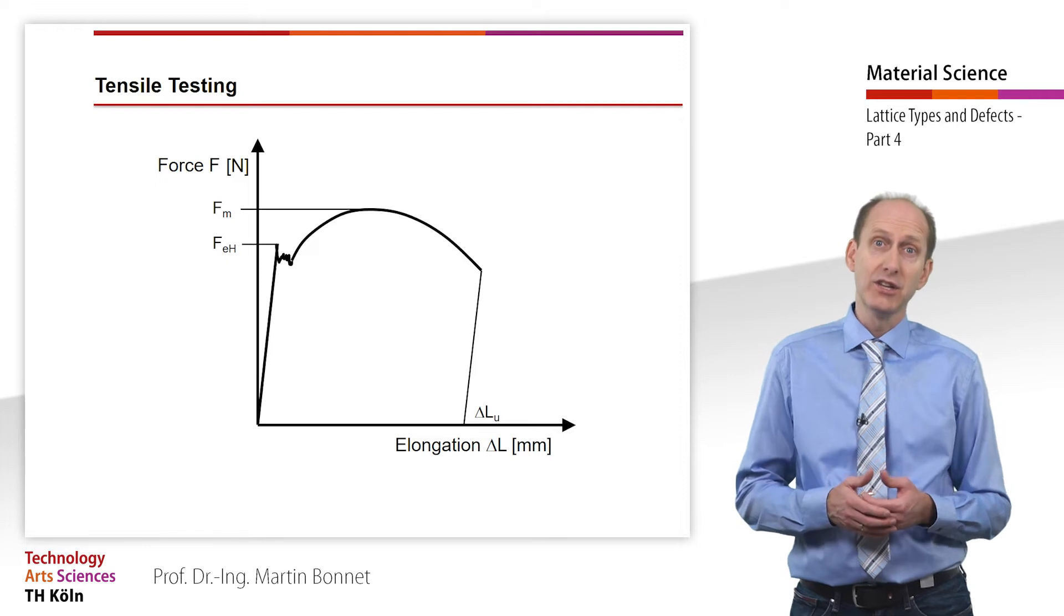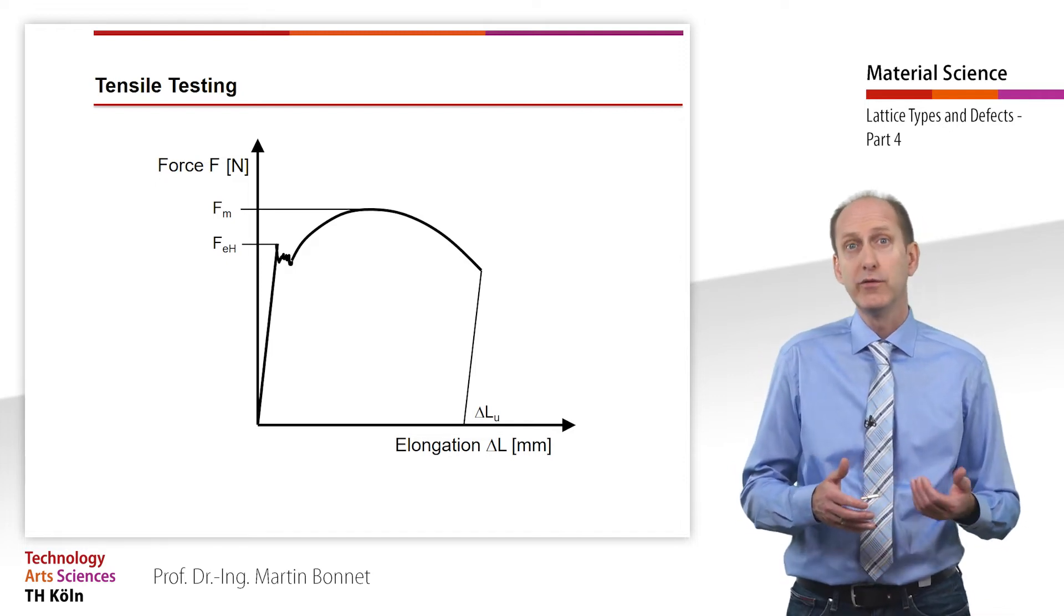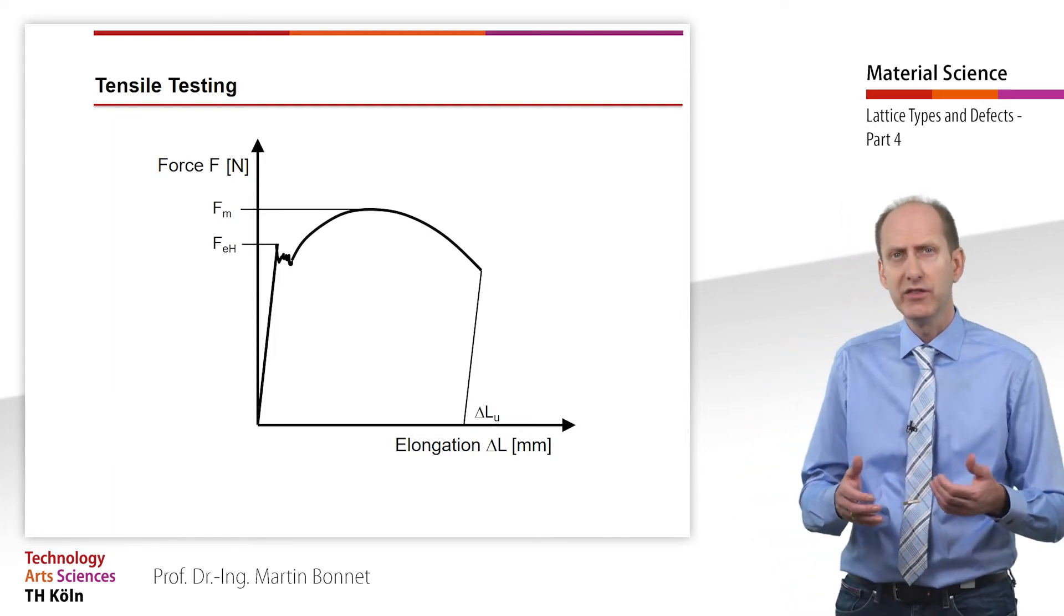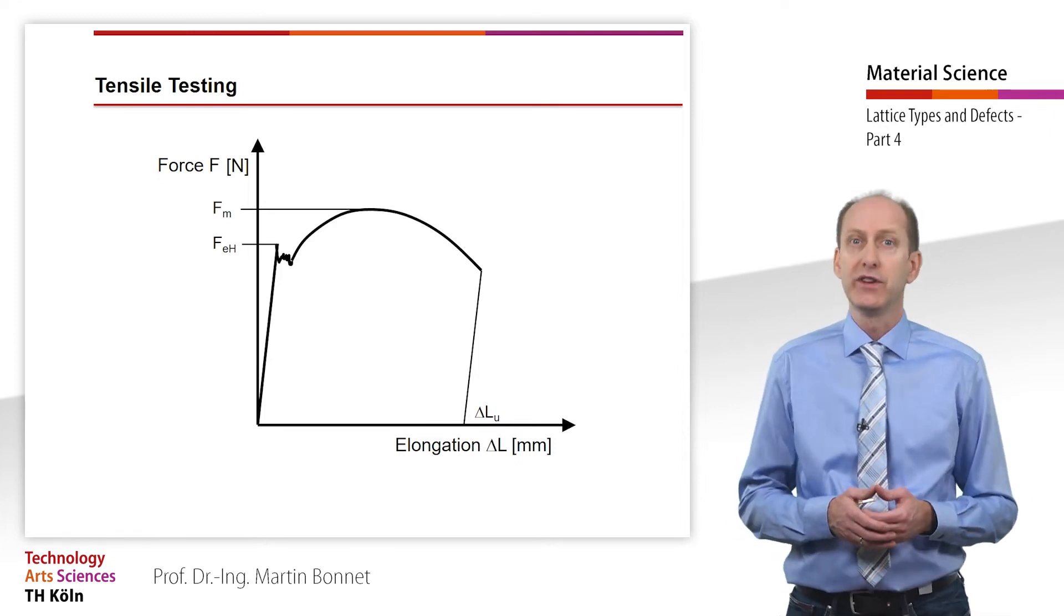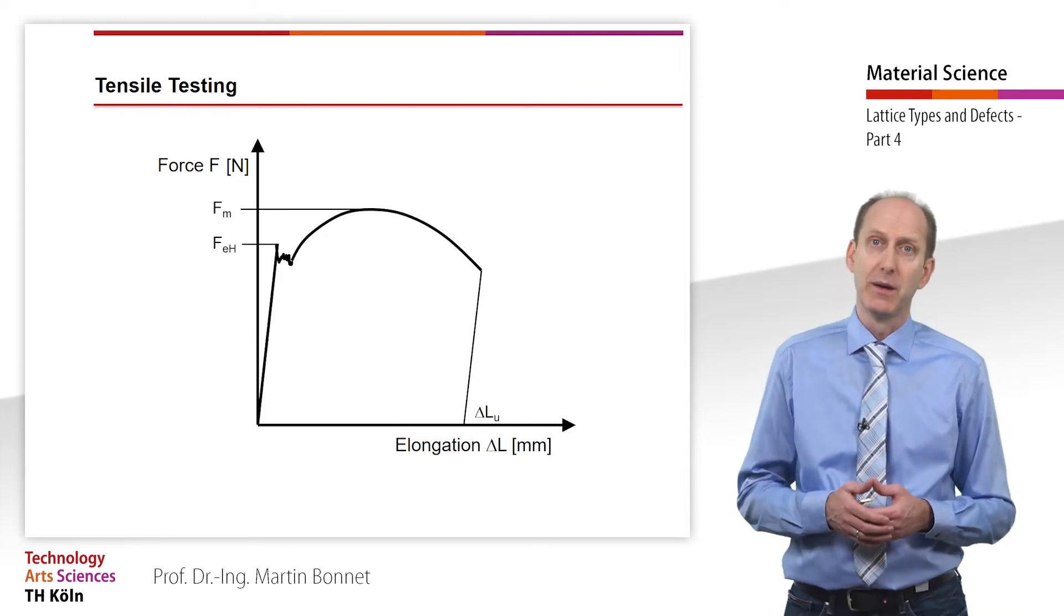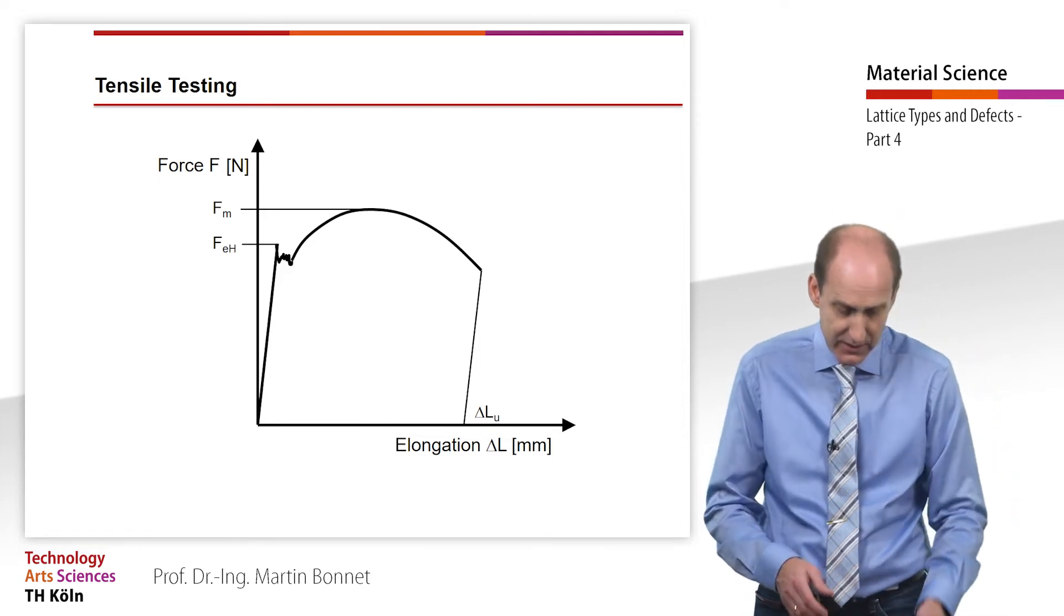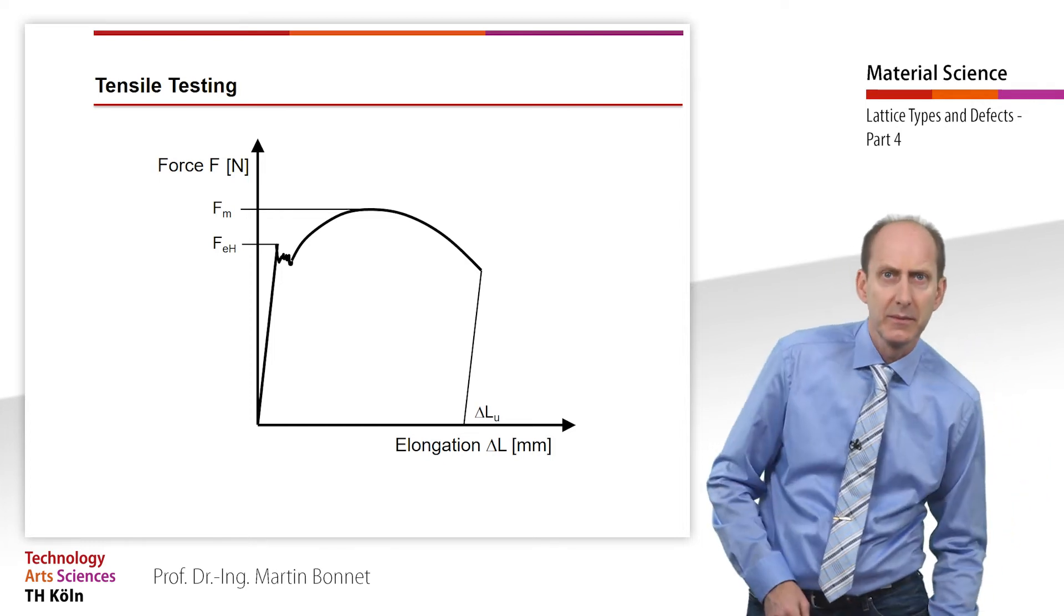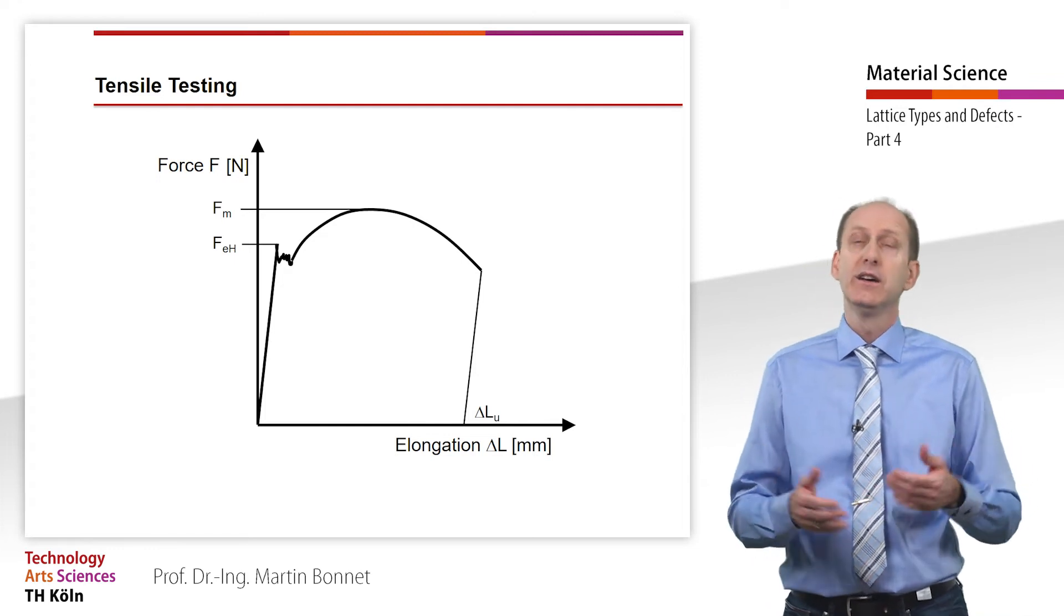Thus, FeH shown in the diagram decreases since the resisting force of the sample suddenly decreases. After exceeding this yield point area, the sample elongates more and more as the force increases. At a specific maximum force Fm in the diagram, the sample begins to neck as we can see in this sample. Here the force decreases and finally the sample breaks.